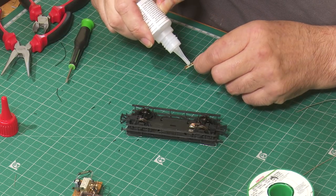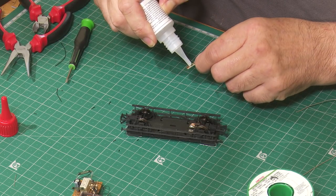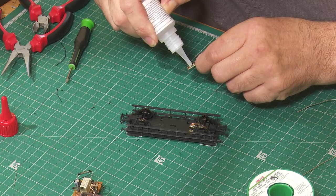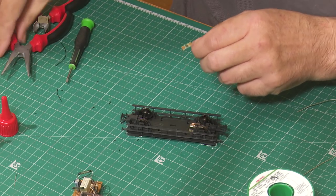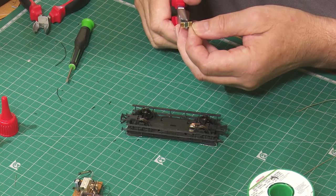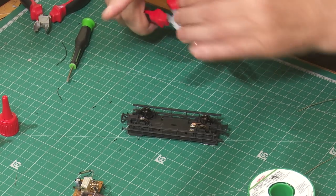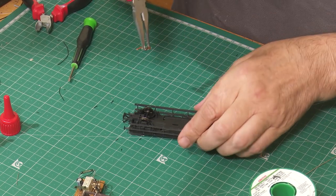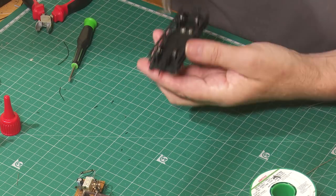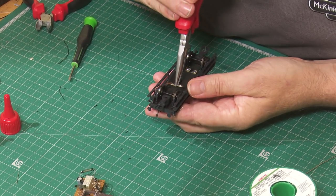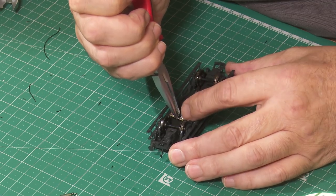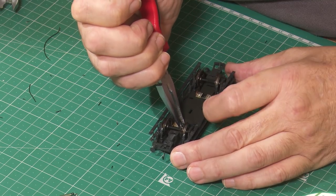Turning to the pickups, we now superglue two sets of pickups to the underside of the guards van chassis. Taking care that the springs on the pickups stay in contact with the inside surfaces of the wheels and that the pickups are central.